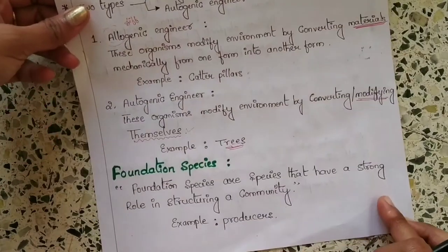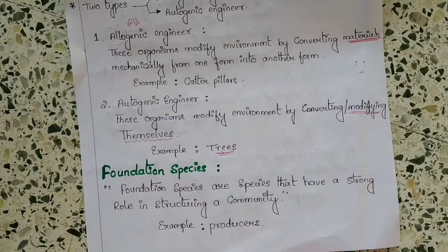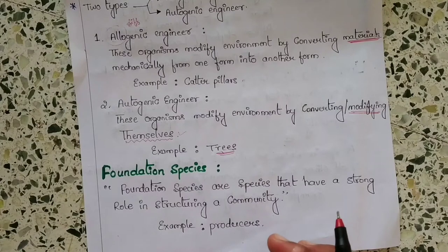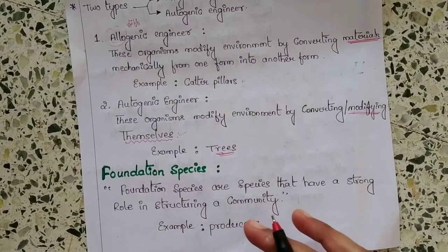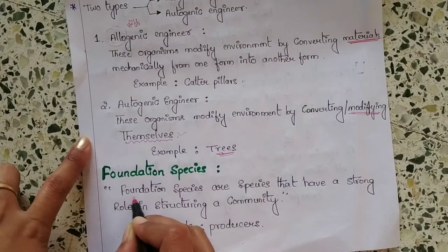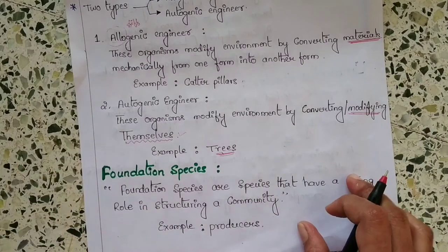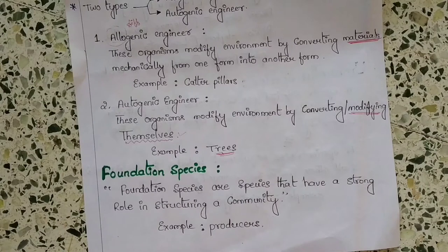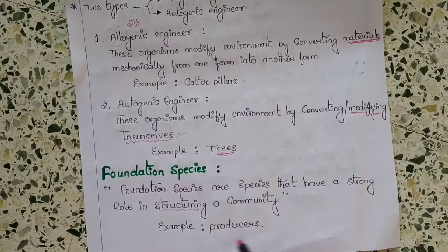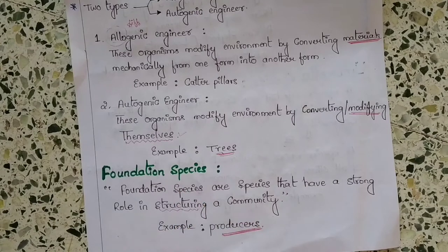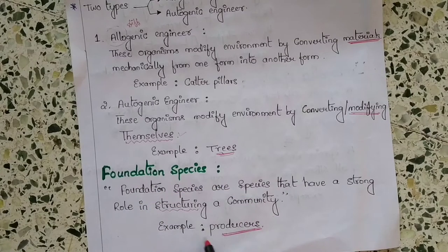Let us move on to the next term, which is foundation species. This is very simple and easy to understand — the name itself gives the answer. Foundation species are species that provide the foundation of a habitat. The definition is: foundation species are species that have a strong role in structuring a community. An example for this is producers, or primary producers.